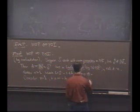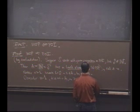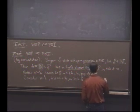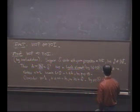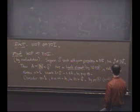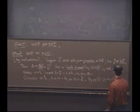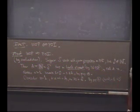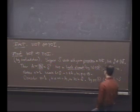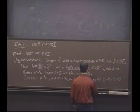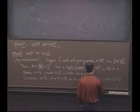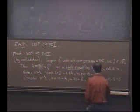But by property B, n minus 1 plus 1 should therefore be in what? S. Which implies, implying n is in S, a contradiction.